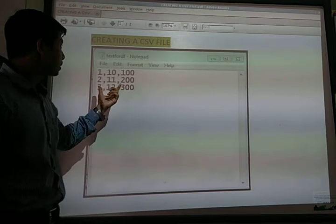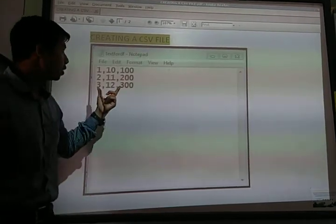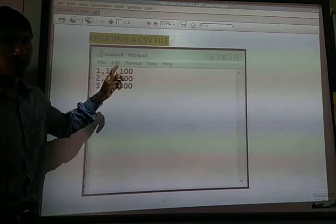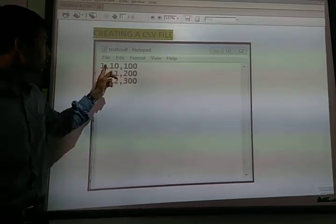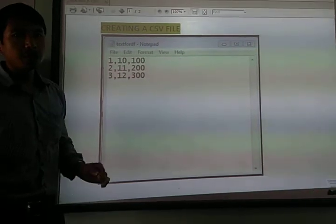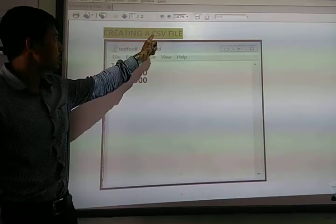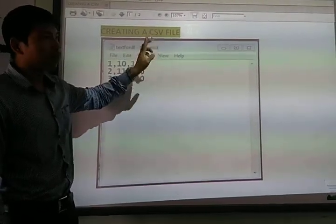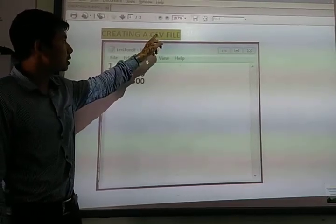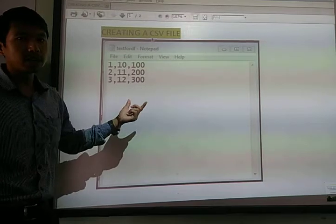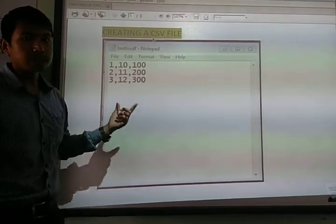Now to make it a CSV file, by default in Notepad when you are saving a file, it will be .txt. But for CSV you have to give a name and write the extension .csv after the filename. It will be saved as a CSV file, meaning comma separated values.